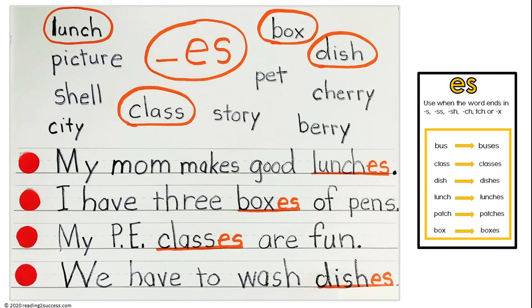Our second activity is adding es to the end of words to make them plural. Es is added when a word ends in s, ss, sh, ch, tch, and x. Review the es card and then follow the same routine as in the first activity.